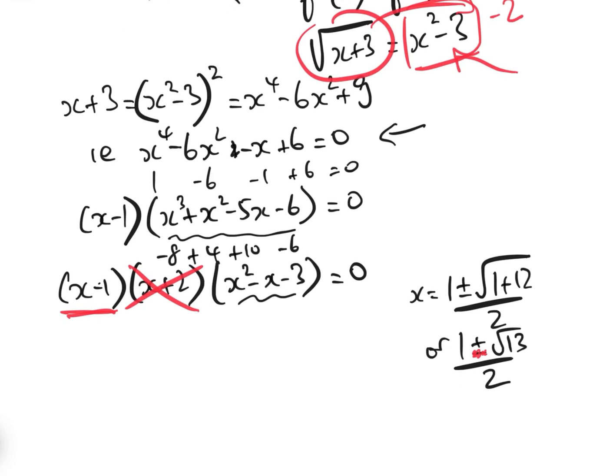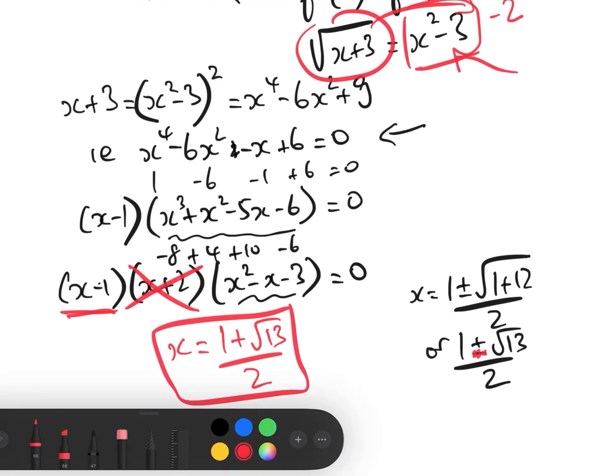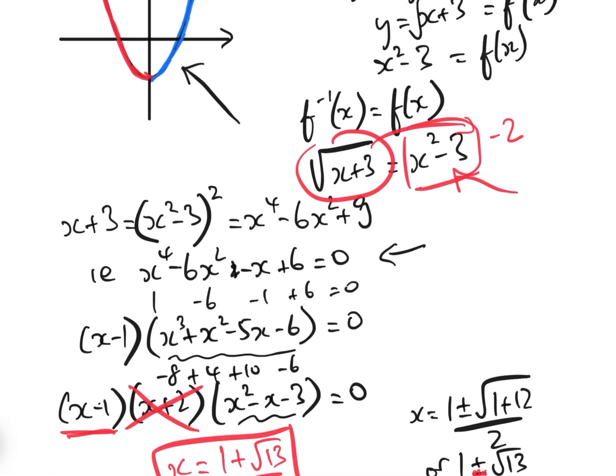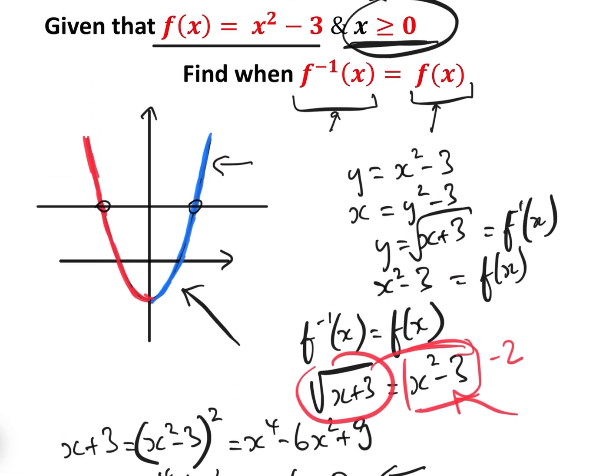And so therefore the solution is x equals 1 plus root 13 over 2. So we have found the answer, but it was a little bit difficult and we had to solve a quartic. There is a simpler way, a much simpler way in fact.